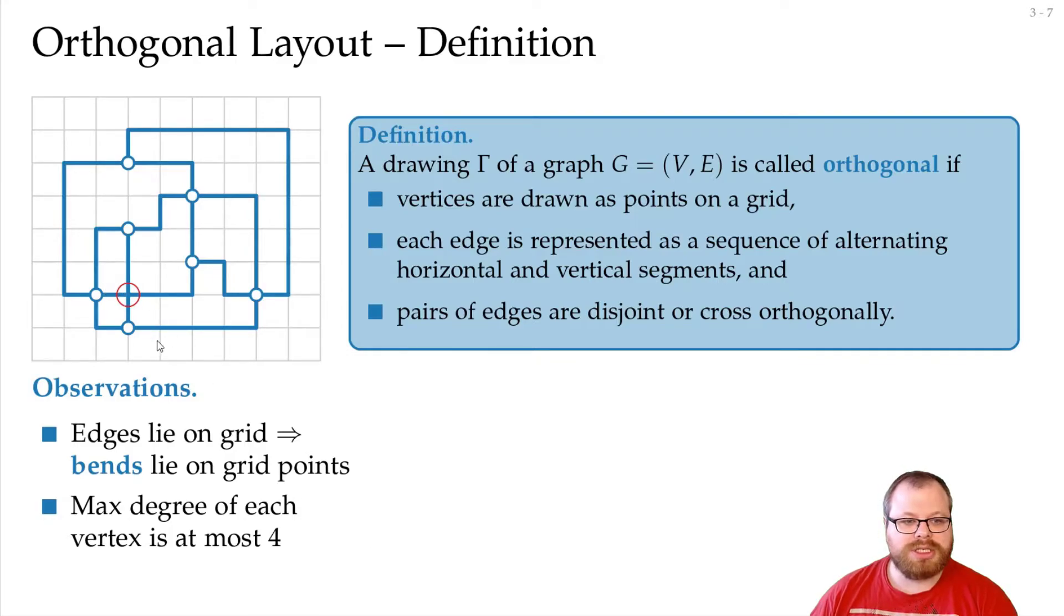There are some extensions to this drawing style if we want to generalize it to a larger degree. For example, we can allow at the start of the vertices that the edges have some overlap, like here, so we have three edges leaving to the top, and then at some point they split. Or we can try to draw these vertices larger, not as just a single point, but as a rectangle. And if that spans enough grid points, then we can also have more edges that leave in all directions.